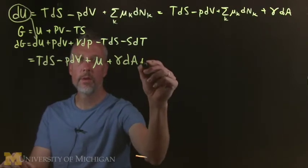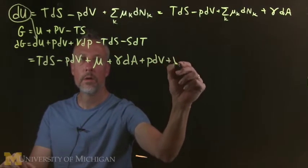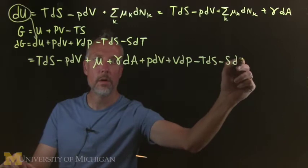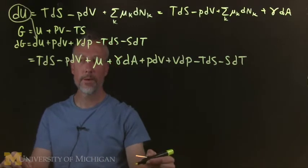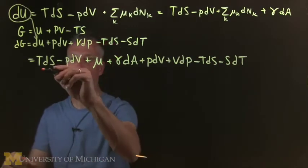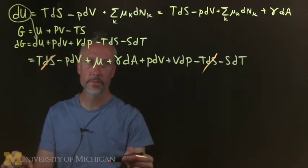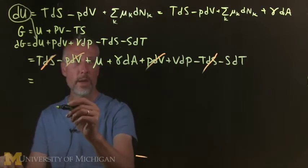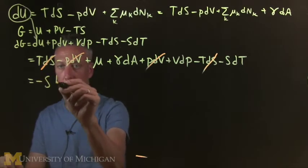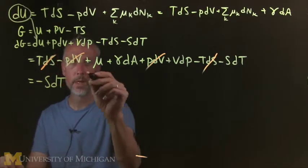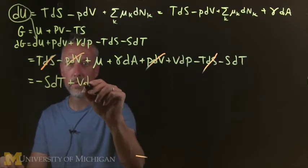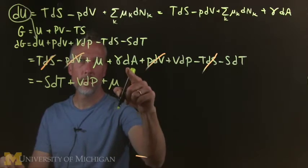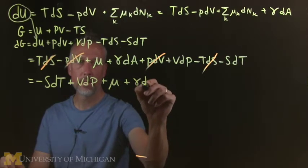Now all the U stuff, all right, and look for cancellations. That one and PdV. So we end up with minus SdT plus VdP, which we usually do, plus mu, and then we're left with our gamma dA.